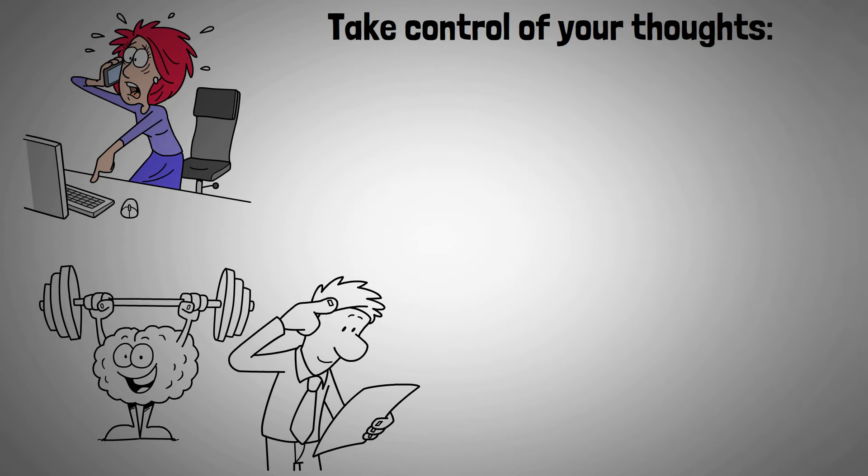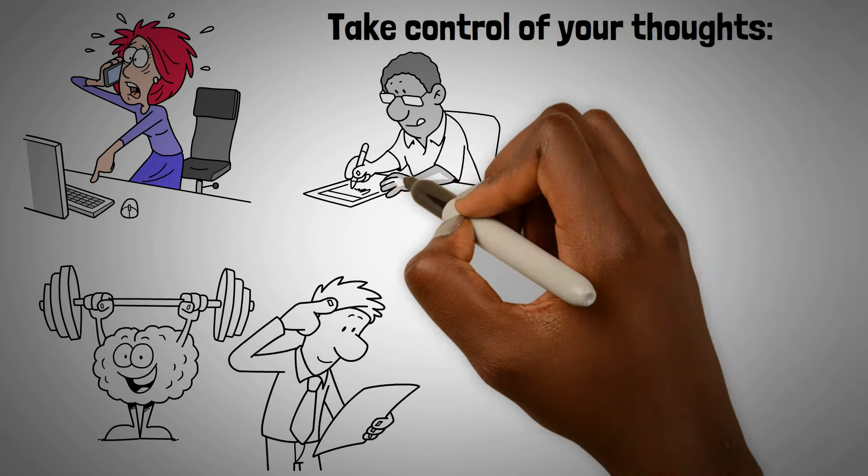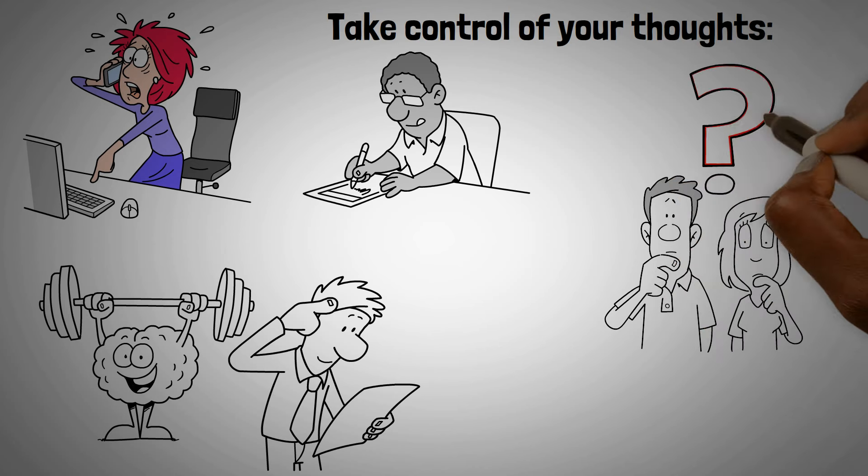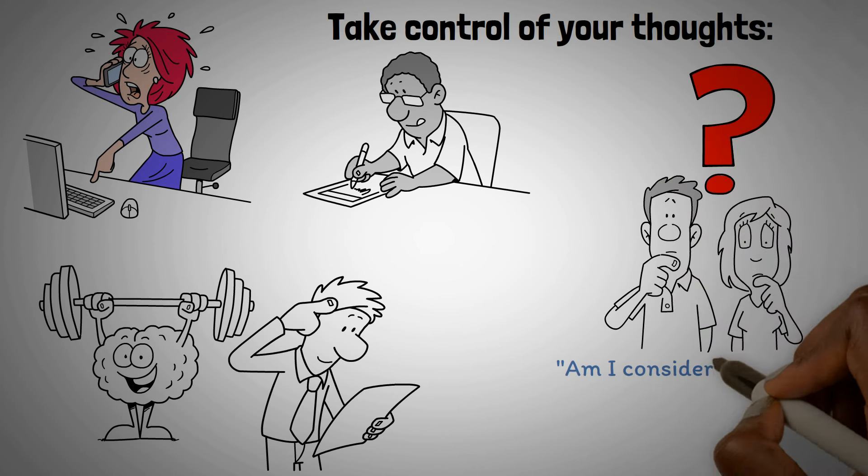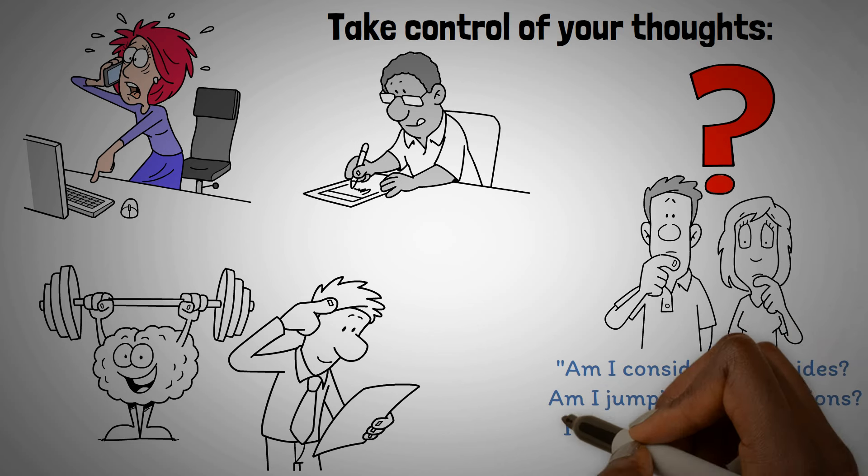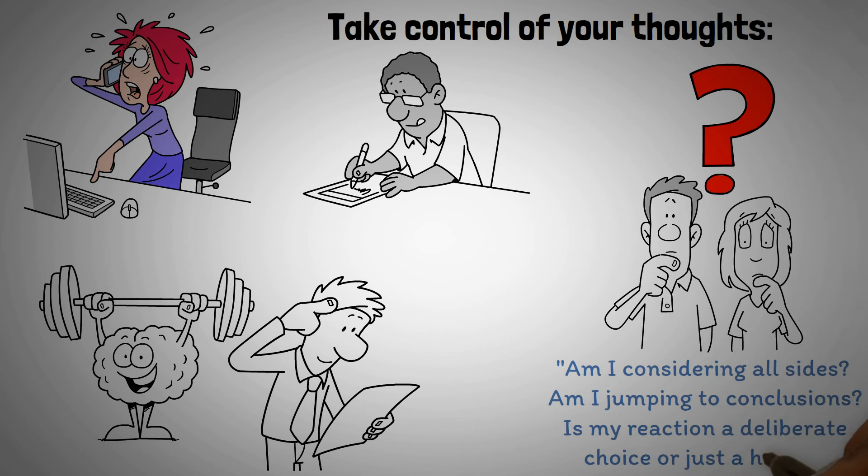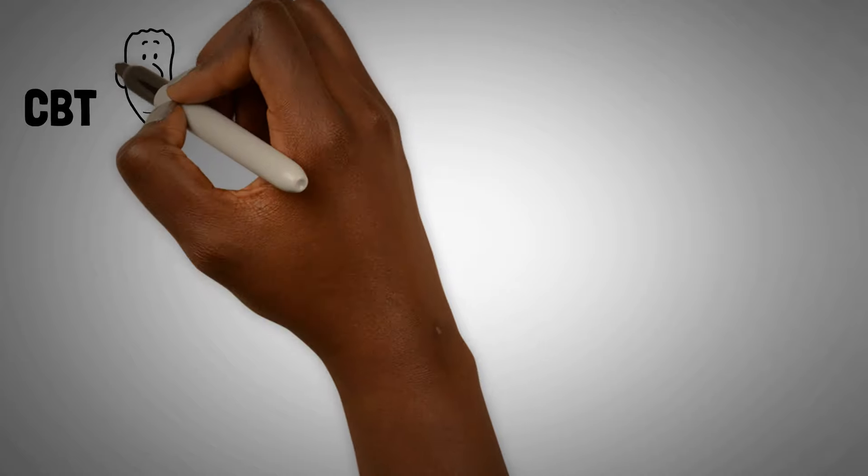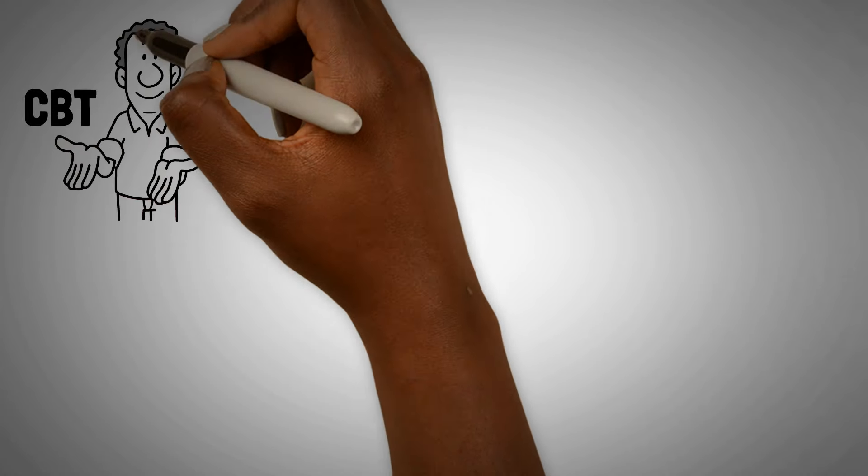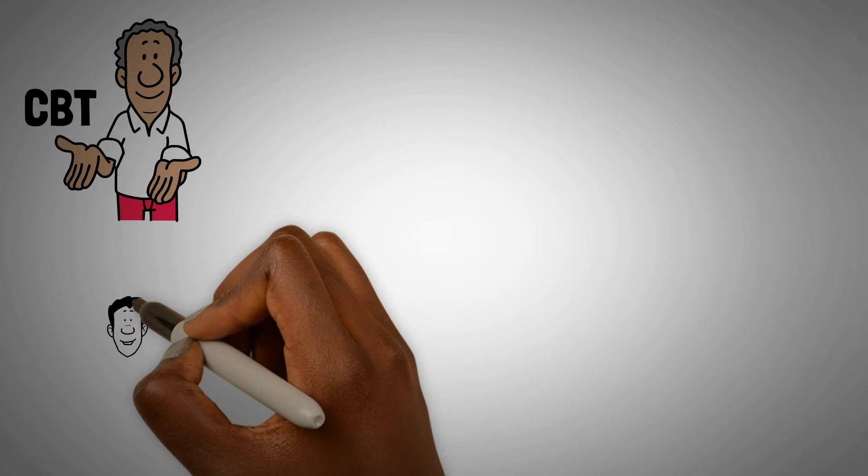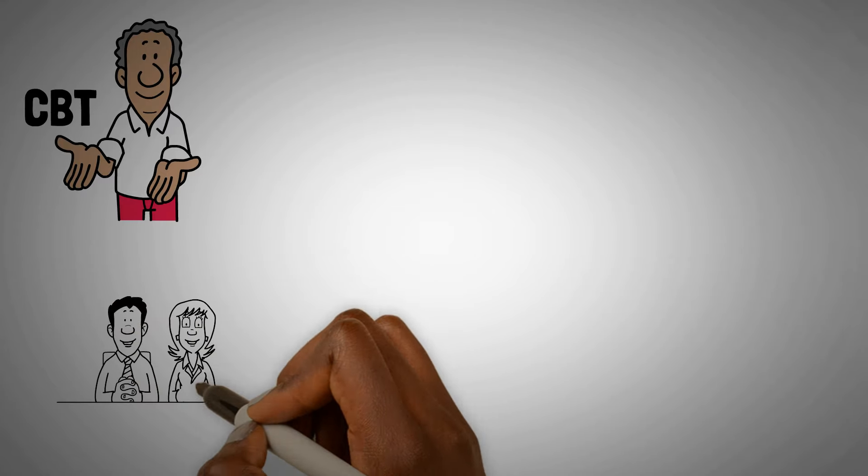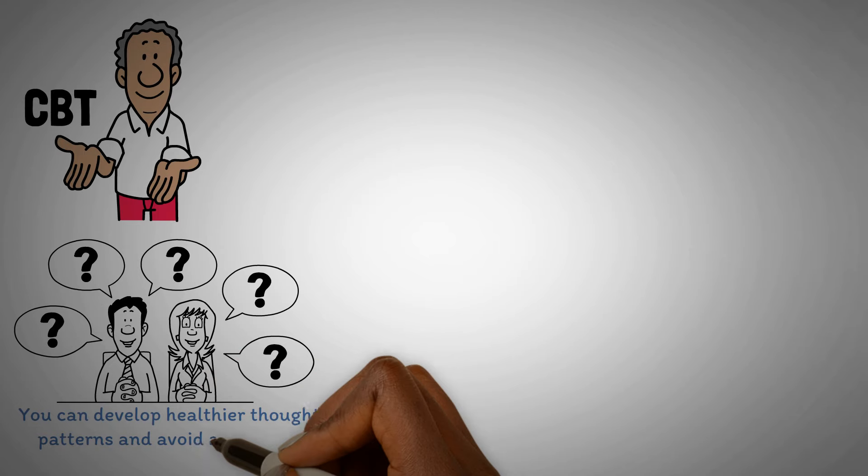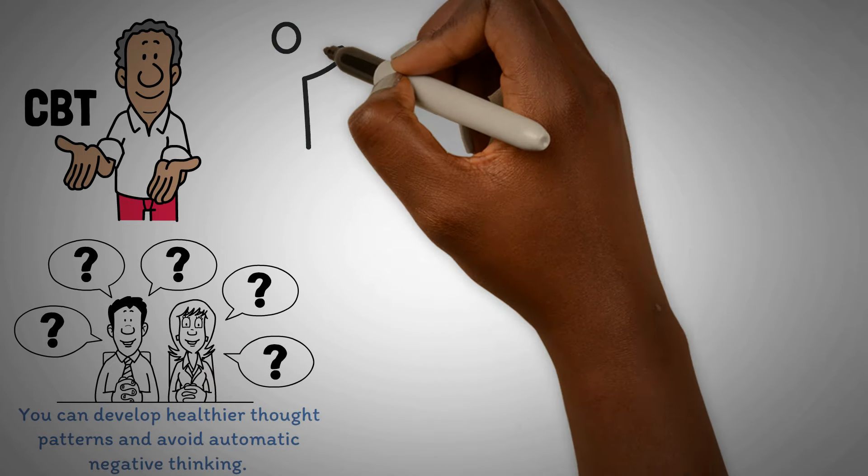Take control of your thoughts. Start by tracking your negative thoughts in a journal for a few weeks. When you feel overwhelmed by negative emotions, pause and ask yourself, Am I considering all sides? Am I jumping to conclusions? Is my reaction a deliberate choice or just a habit? Then write down at least three alternative thoughts. CBT is a powerful way to manage and reframe intrusive emotions. By understanding and questioning why certain feelings arise and how they impact your mindset, you can develop healthier thought patterns and avoid automatic negative thinking.